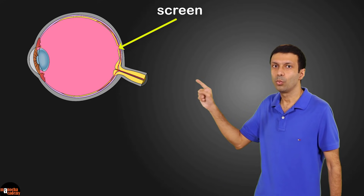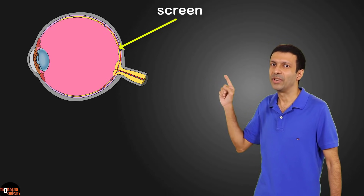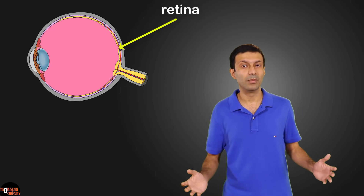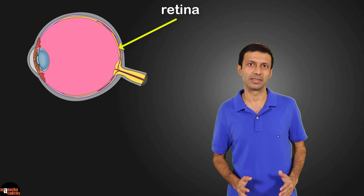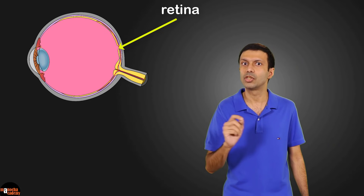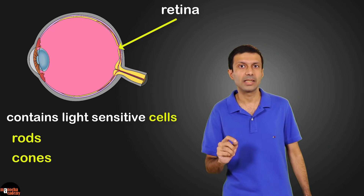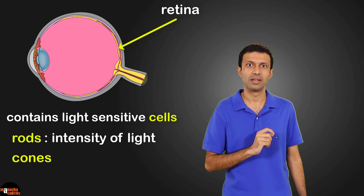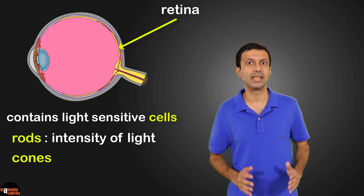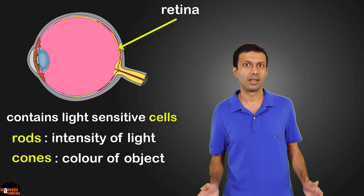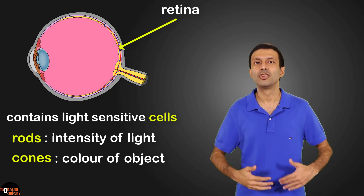At the back part of the eye, we have the screen on which the image is formed — this screen is called the retina. The retina is like the film in old film cameras or the digital sensor in today's digital cameras. The retina contains a large number of light-sensitive cells known as rods and cones. The rod cells are sensitive to the intensity of light, so they help us distinguish between light and dark. The cone cells are sensitive to the color of the object and work under normal or bright light.